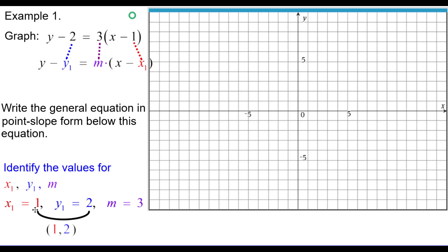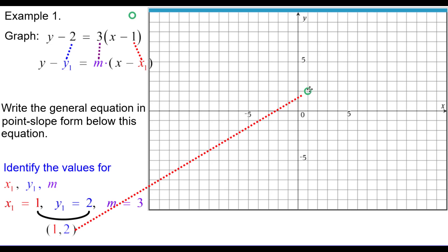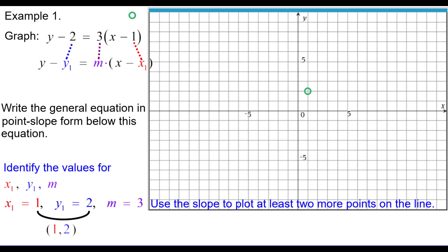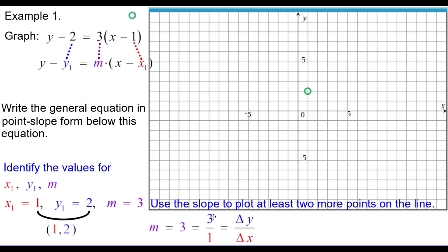From x sub 1 and y sub 1, we get the point 1 comma 2 on the graph. Plot that point: right 1, up 2. Now use slope 3, which is positive 3 over 1: go up 3 and right 1 for one more point. We can also think of 3 as negative 3 over negative 1, meaning down 3 and left 1 for another point. Those three points are collinear — connect them to draw the line.